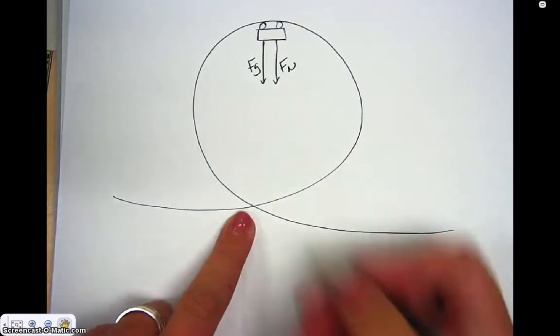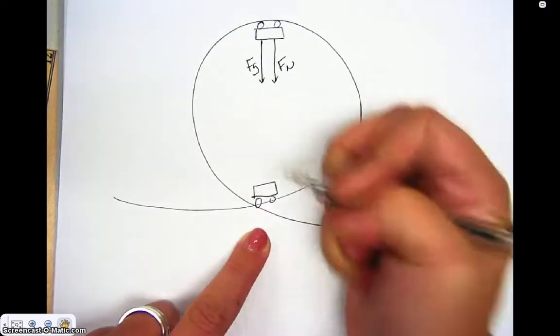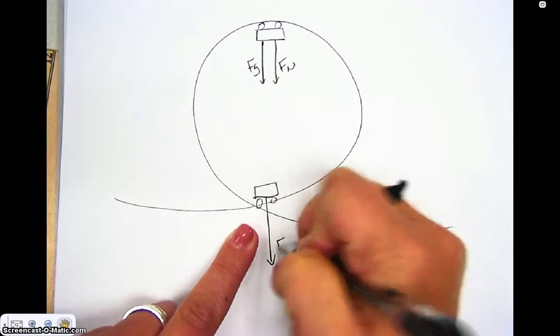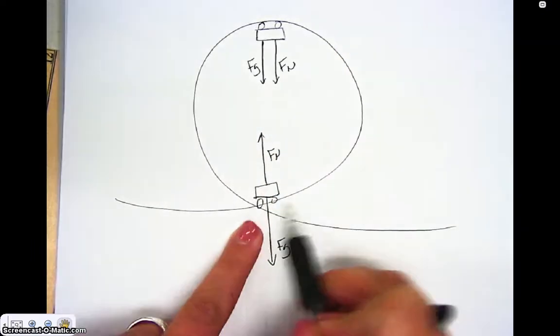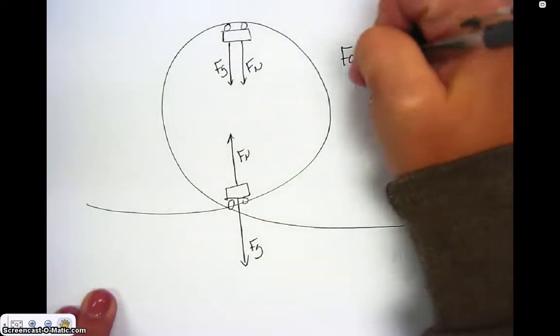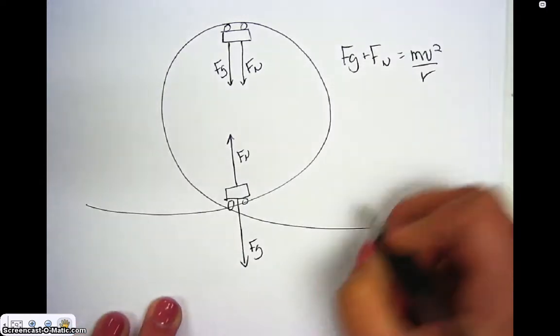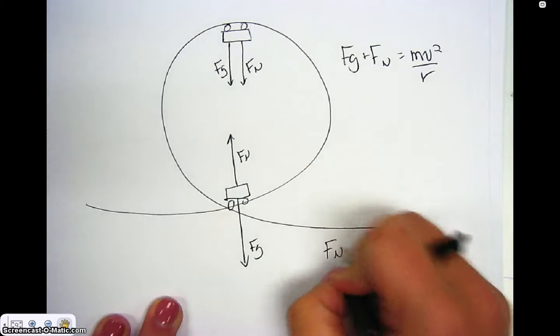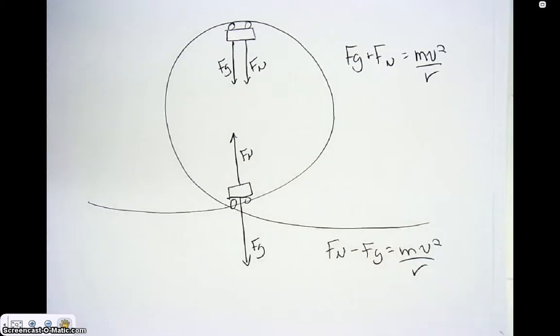At the bottom, if I have the roller coaster down here, now I have gravity acting in this direction, just like the string, but the normal force acting in this direction, or the push of the track on the tires. We can look at the equation and have Fg plus Fn equals mv squared over r. Here we would have Fn minus Fg equals mv squared over r.